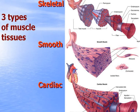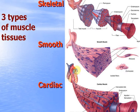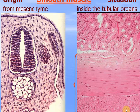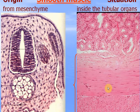There are three types of muscle tissue: smooth, which consists of cells, and two types of striated muscle — skeletal and cardiac. Smooth muscle originated from mesenchyme in embryogenesis. It is located inside the tubular organs like intestine, stomach, urinary bladder, or ureter, or blood vessels, especially arteries.